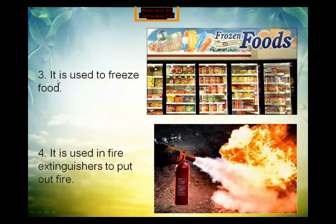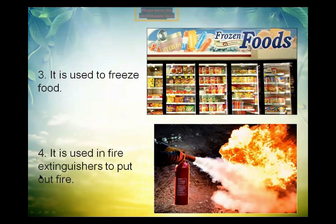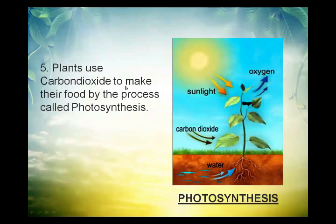Carbon dioxide is used to freeze food and fruits. It is also used in fire extinguishers — since carbon dioxide does not support burning, it is used to put out fires. Another very important use is that plants use carbon dioxide to make their food by the process of photosynthesis, in the presence of sunlight, producing glucose.